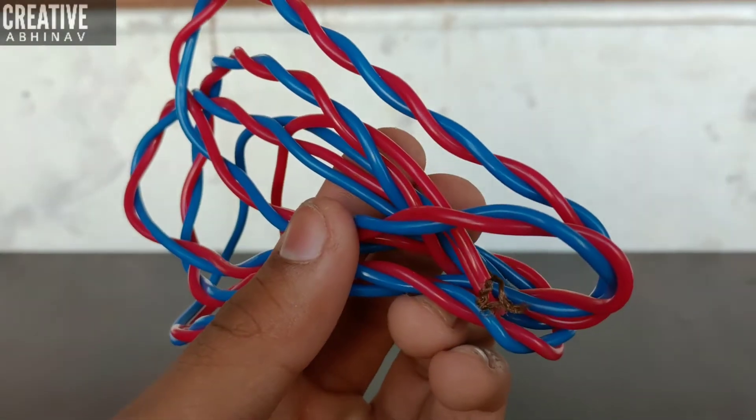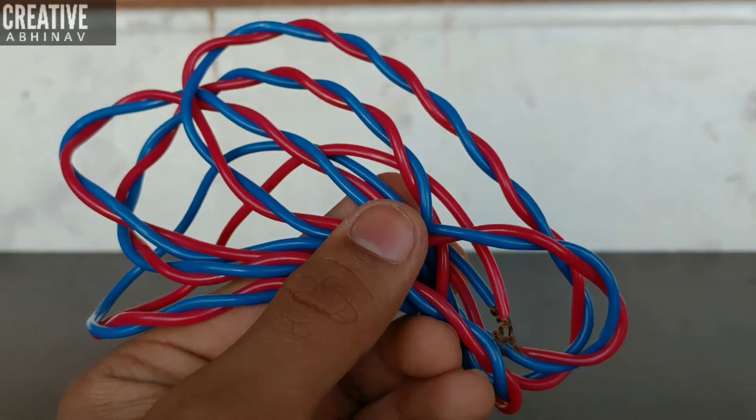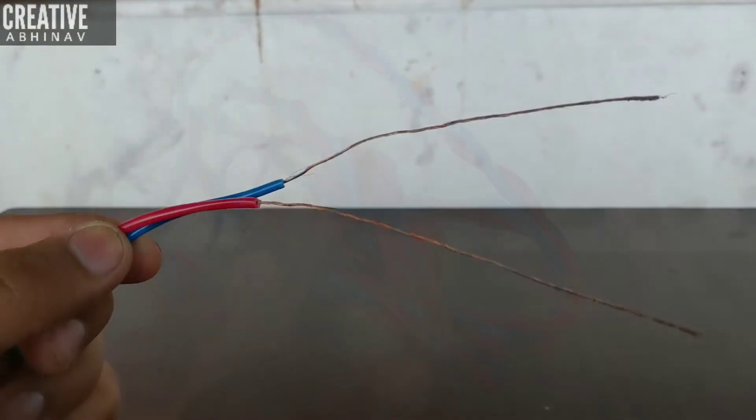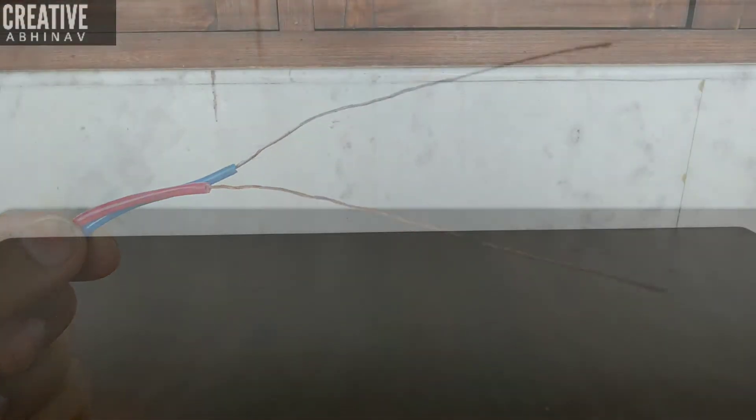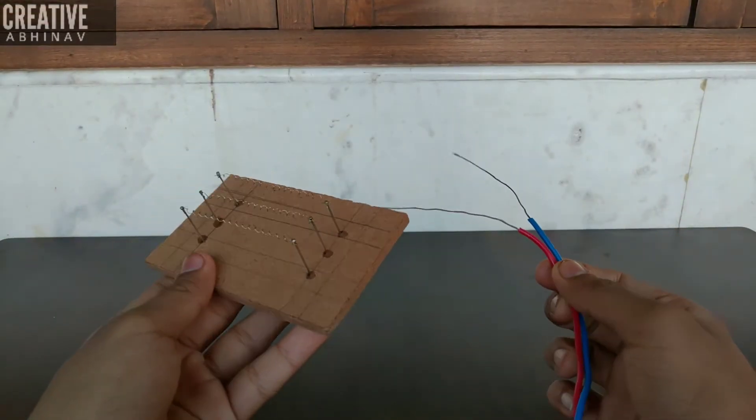Then take a one meter copper wire, then we have to peel 10 centimeter from its head. Then we have to bind these copper wires on our heater board.